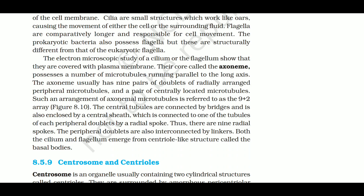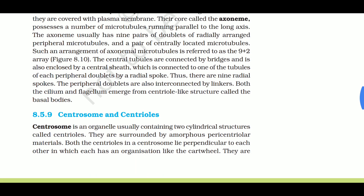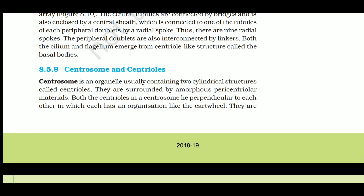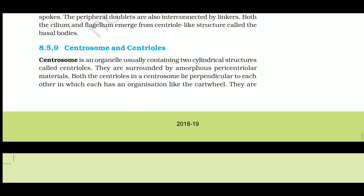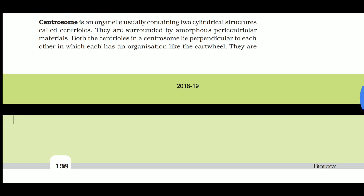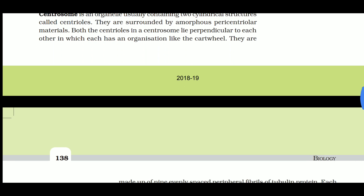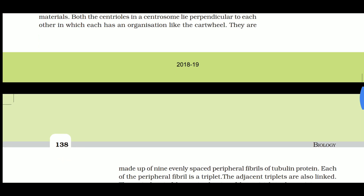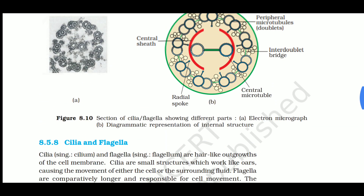Both cilia and flagella emerge from a centriole-like structure called the basal body. The parts of flagellum are: basal body, hook, and filament. The centrosome is an organelle that usually contains two cylindrical structures called centrioles. They are surrounded by amorphous pericentriolar material. Both centrioles in a centrosome lie perpendicular to each other.